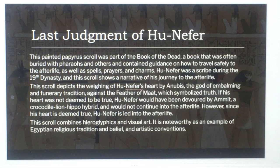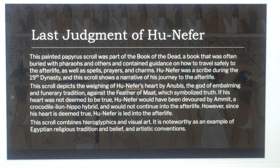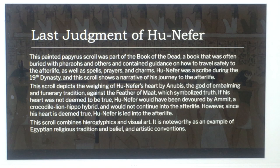Hunefer was a scribe during the 19th Dynasty, and this scroll shows a narrative of his journey to the afterlife. The scroll depicts the weighing of Hunefer's heart by Anubis, the god of embalming and funerary tradition, against the feather of Ma'at, which symbolized truth. If his heart was not deemed to be true, Hunefer would have been devoured by Ammit — the crocodile-lion-hippo hybrid — and would not continue into the afterlife.